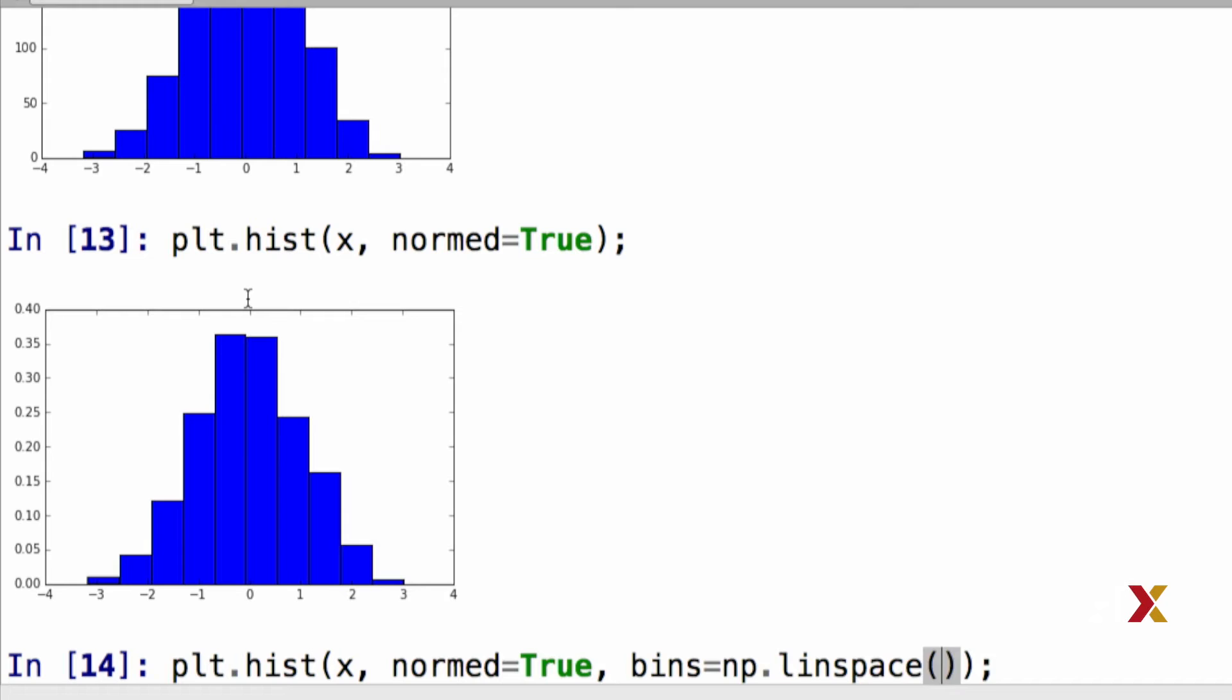Remember, the first argument is the starting point. I'm going to start at minus 5. I want to go all the way to plus 5, and I'd like to have 21 points.